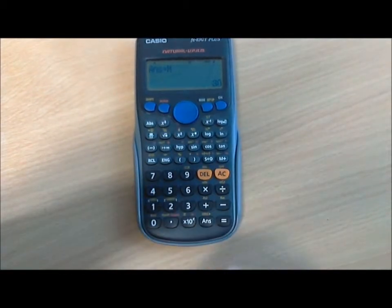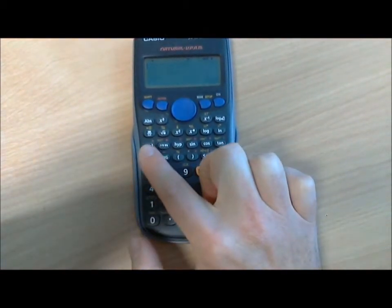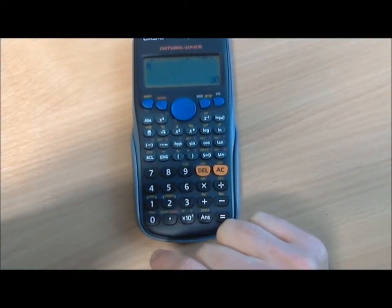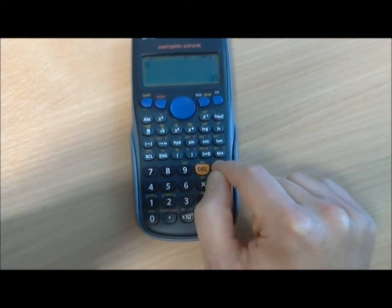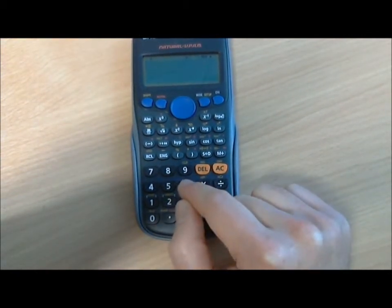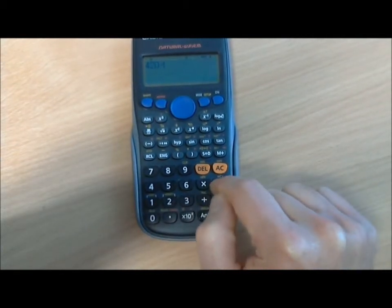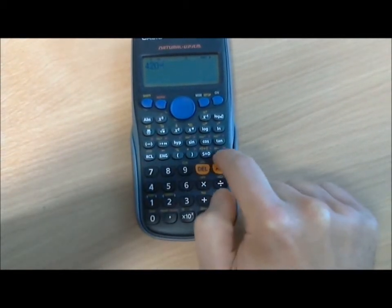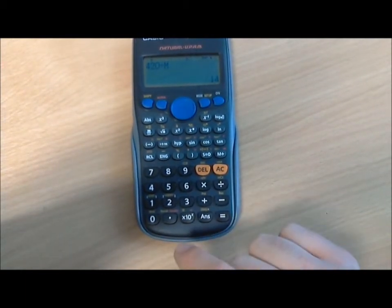If we clear what's on the screen and hit recall memory plus, it will show you what's in memory, the 30. We can use that in any subsequent calculations. So for example, if we wanted to do 420 divided by recall memory, it will now divide 420 by 30 and give us 14.